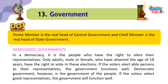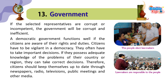Democratic Governments. In a democracy, it is the people who have the right to elect their representatives. Only adults, male or female, who have attained the age of 18 years have the right to vote in these elections. If the voters elect able persons as their representatives, the government functions well. However, democratic government is the government of the people — if the voters select good representatives, the government will function well; if the selected representatives are corrupt or incompetent, the government will be corrupt and inefficient. A democratic government functions well if the citizens are aware of their rights and duties. Citizens have to be vigilant in a democracy. They often have to take important decisions. If they possess adequate knowledge of the problems of their country or region, they can take correct decisions.